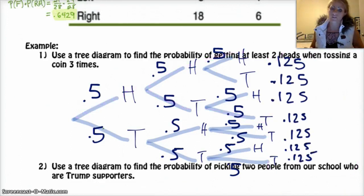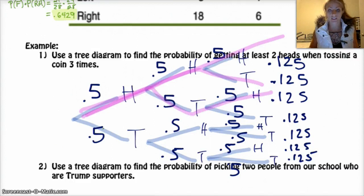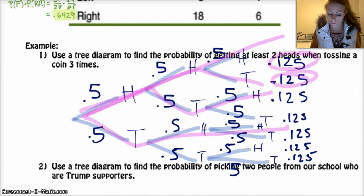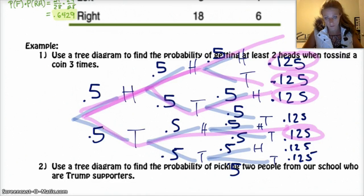We're curious about all of the paths that give us at least two heads. That would be: head-head-head, head-head-tail, head-tail-head — that's two heads. Head-tail-tail is only one head. Tail-head-head — yes. Tail-tail-head — no. Tail-head-tail — no. So there are 4 different paths where you could get two or more heads. The probability of that occurring is just adding them all up: 0.125 plus 0.125 plus 0.125 plus 0.125, which gives you 0.5.